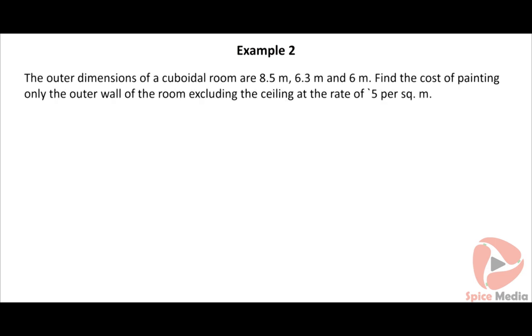Let us look at another example to find the surface area of a cuboid. The outer dimensions of a cuboidal room are 8.5 meters, 6.3 meters, and 6 meters. Find the cost of painting only the outer wall of the room, excluding the ceiling, at the rate of rupees 5 per square meter. Click on the solution button to view the solution.